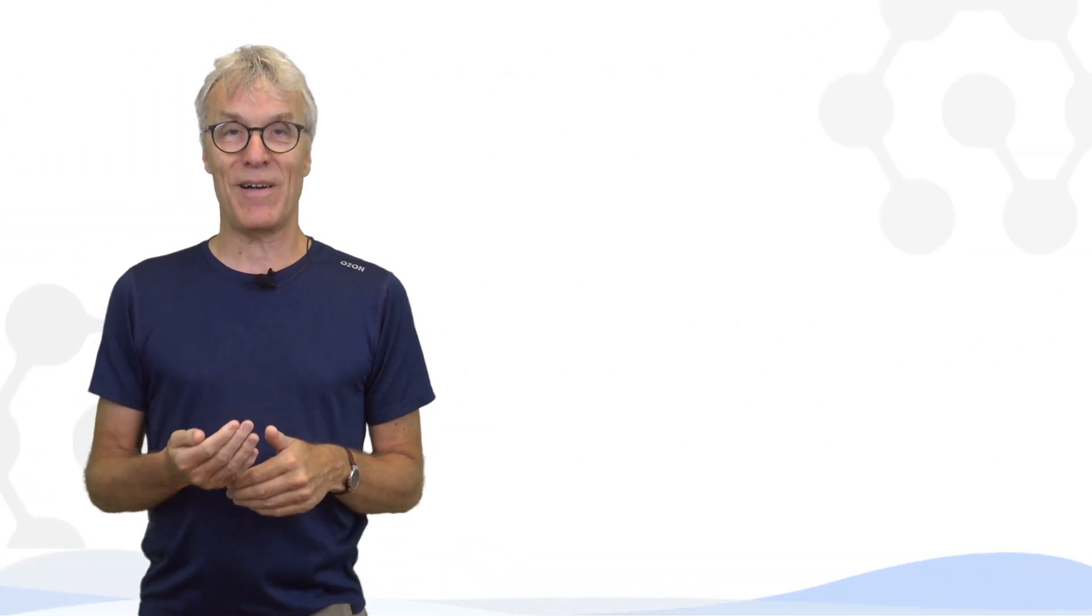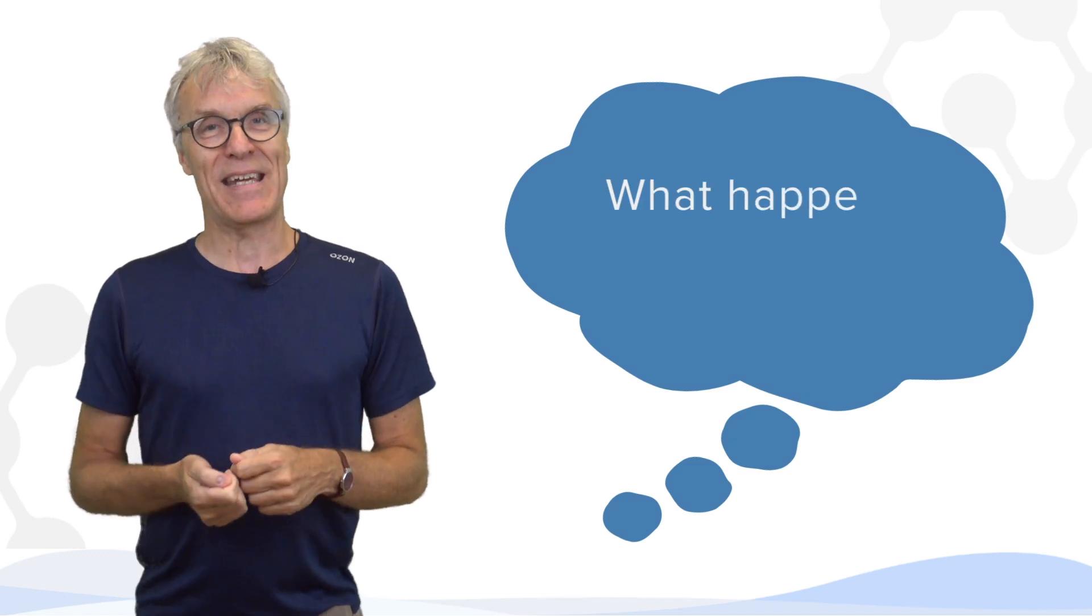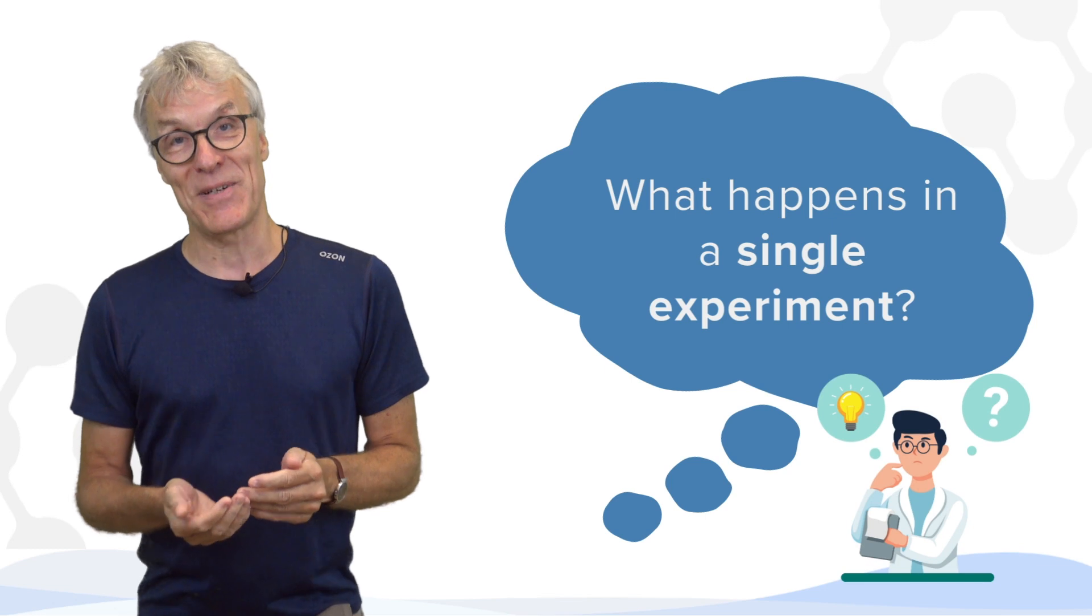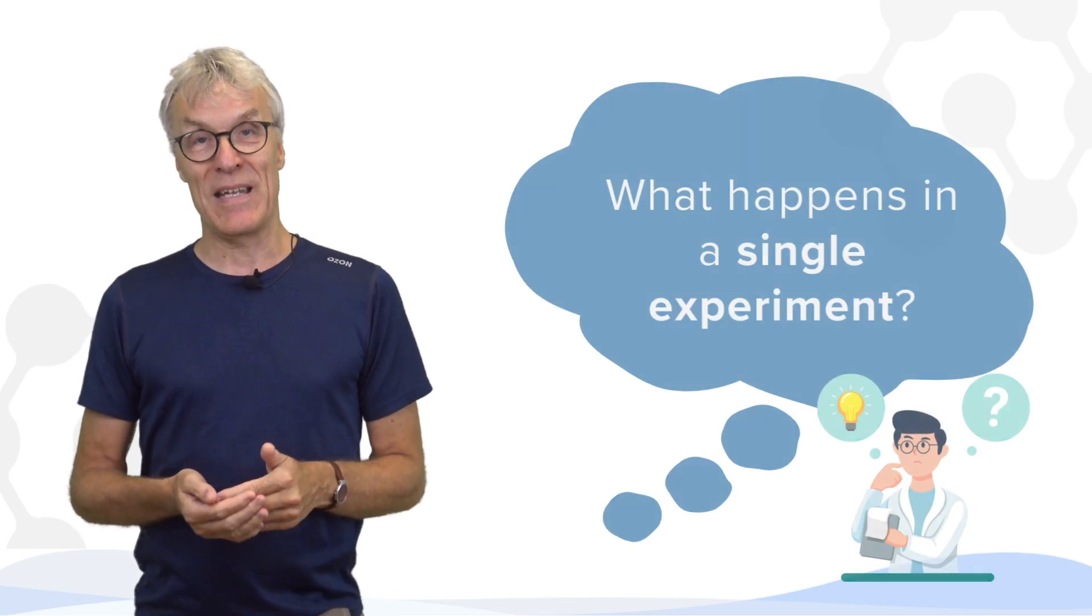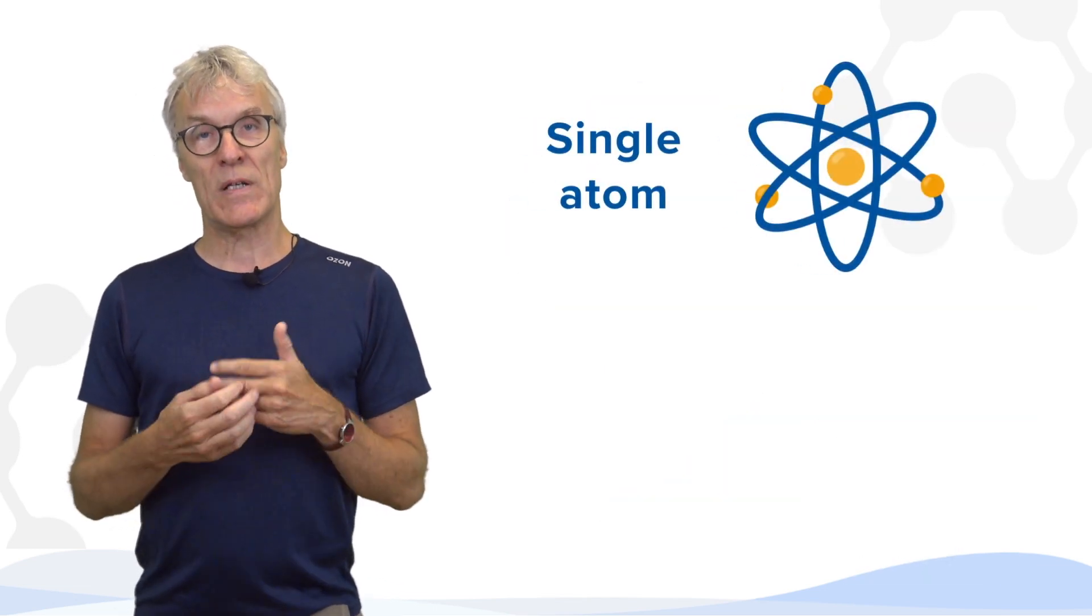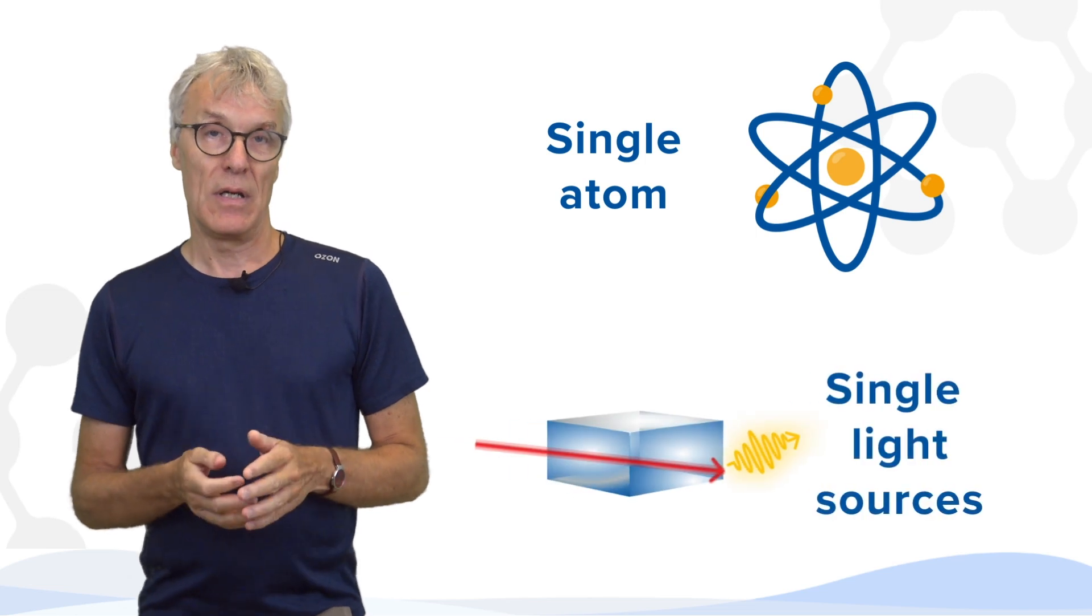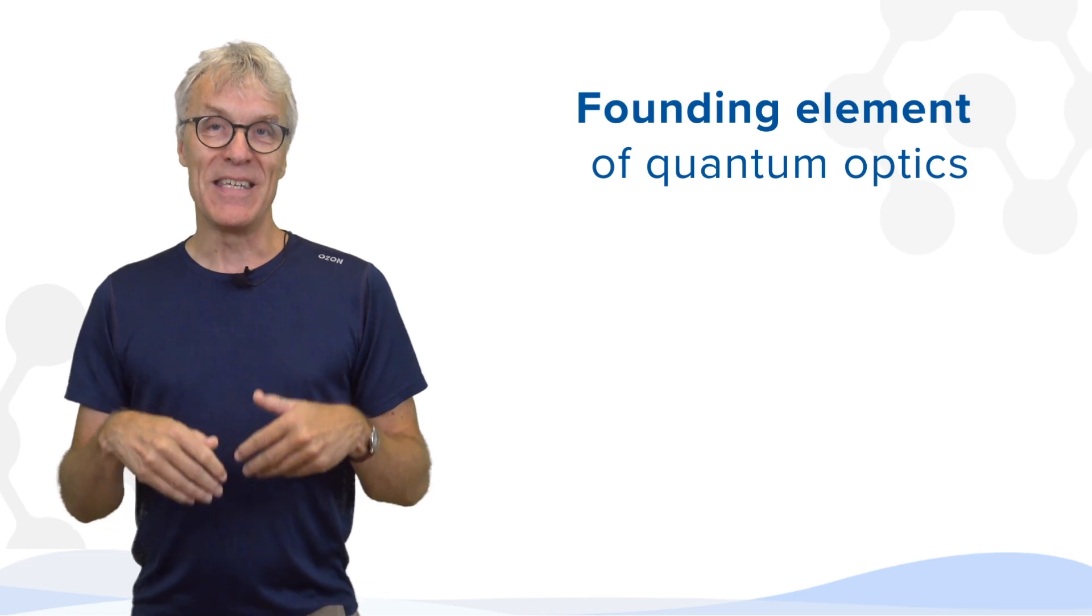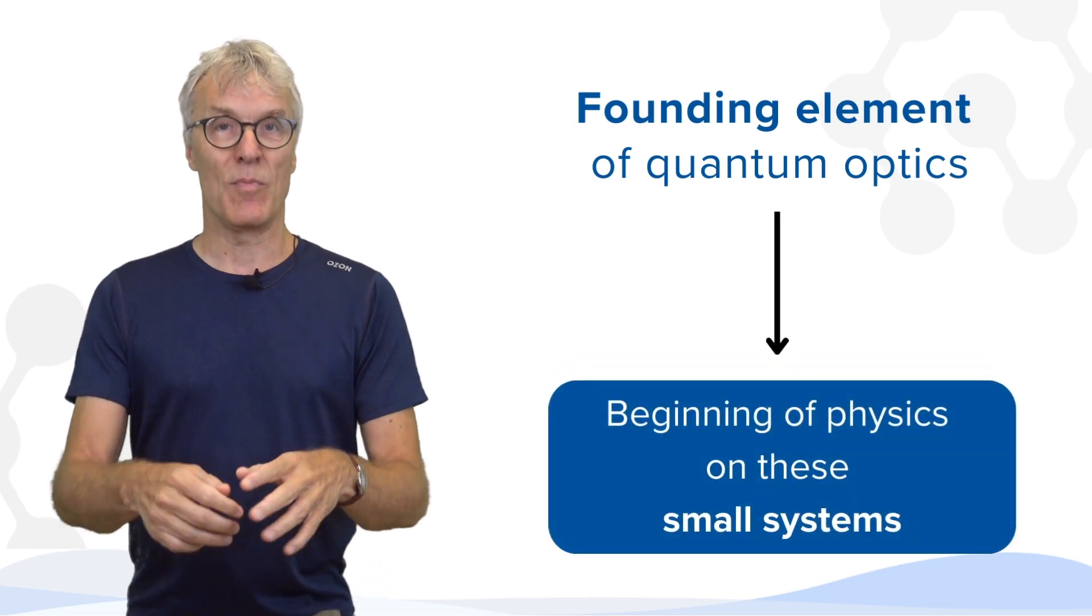But the physicists were struggling to understand what happens in a single experiment. And it was a very abstract, but also a very hypothetical question, because it's difficult to do an experiment with a single atom, do experiments with single light sources. And this is actually the founding element of quantum optics, is the beginning of physics on these small systems.